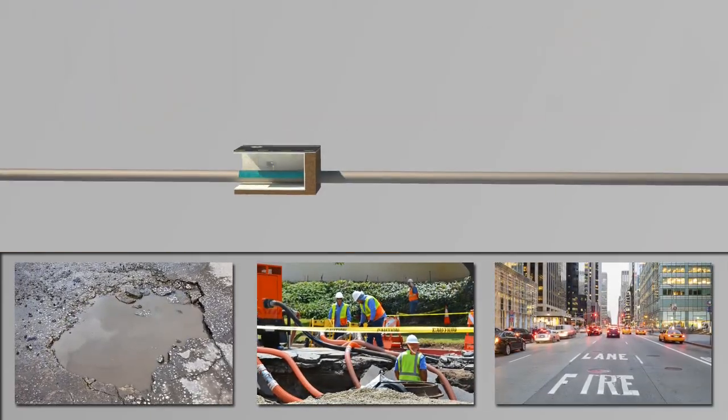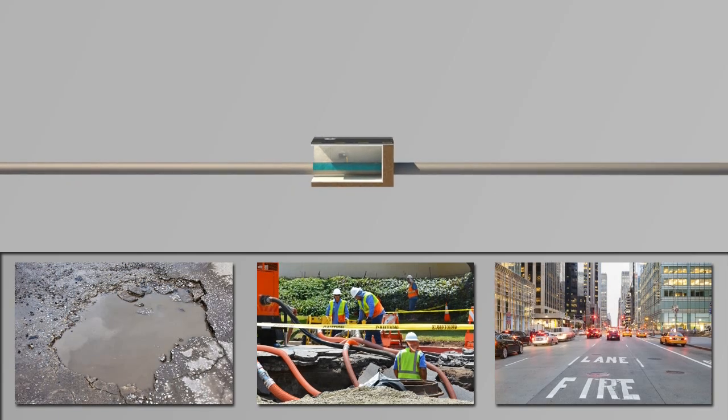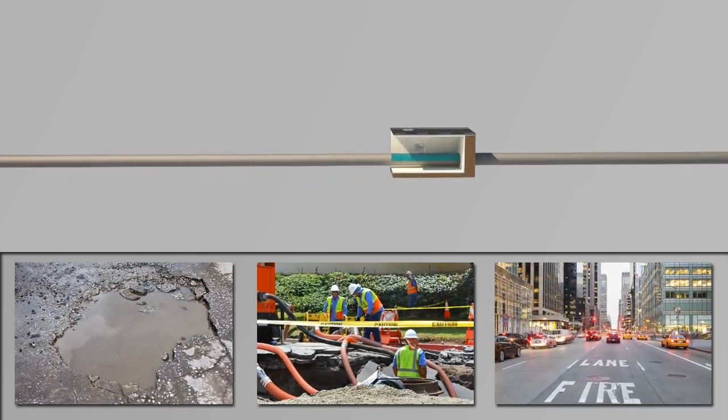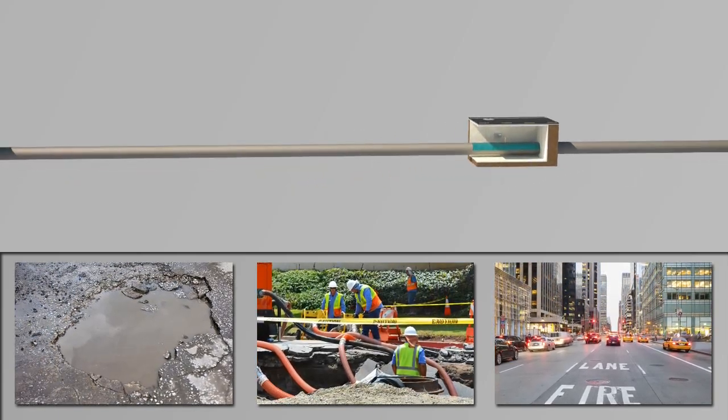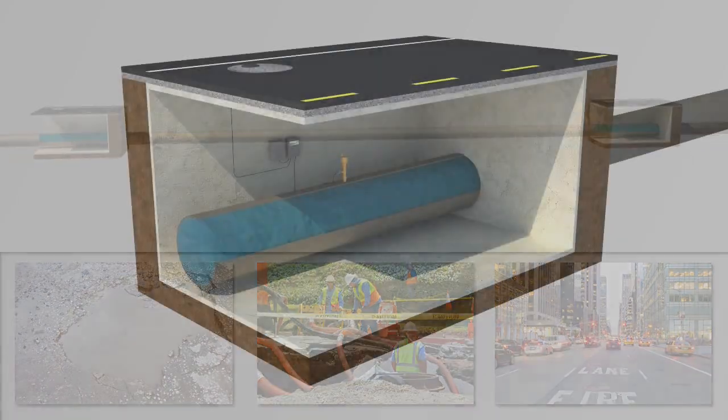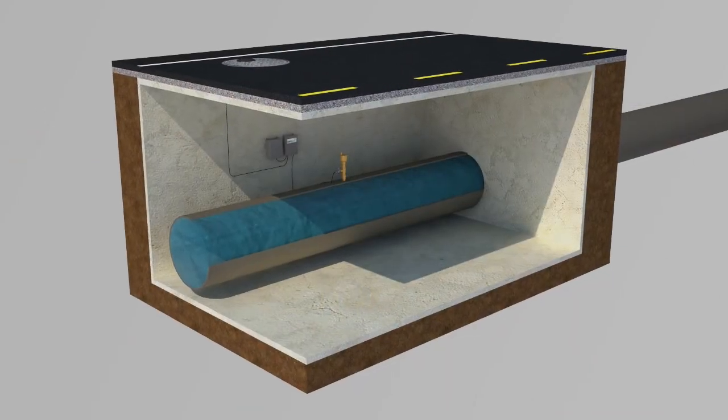EchoShore monitoring is easy to deploy, simple to maintain, and can be applied throughout your transmission system on any pipe material with a diameter of 16 inches or larger.